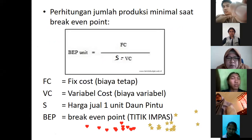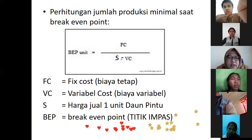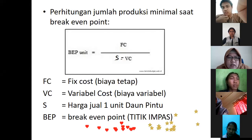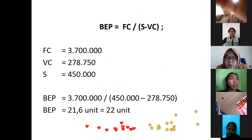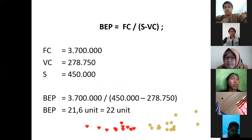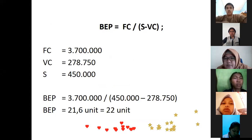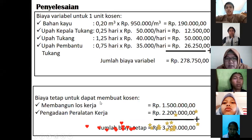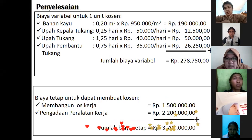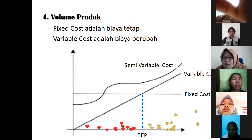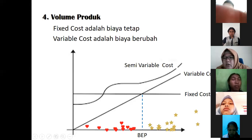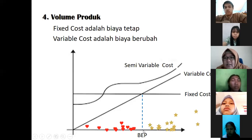Jadi kita hitunglah BEP-nya. Rumus BEP-nya: biaya tetap dibagi dengan harga jual per unit dikurang biaya variabel. Kita masukkan aja angkanya, dapatnya 22 unit. Jadi kalau dia buat 22 unit, BEP-nya 22 unit, biaya variabelnya sekian, biaya tetapnya sekian. Kalau dia bikin cuma 22 unit, bagus dia beli atau dia buat sendiri?